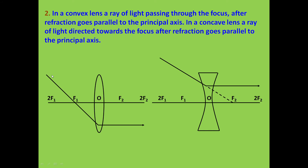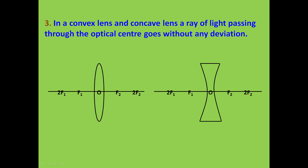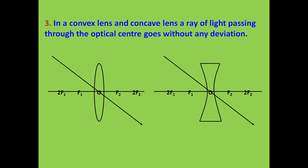In a convex lens, the ray of light passing through the focus becomes parallel to the principal axis. Third rule: In both convex and concave lenses, a ray of light passing through the optical center goes without any deviation — there is no change in its path. Similarly, in a concave lens, a ray passing through the optical center also goes without any deviation.